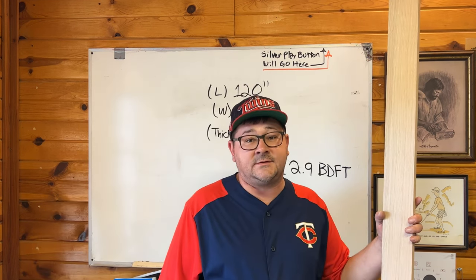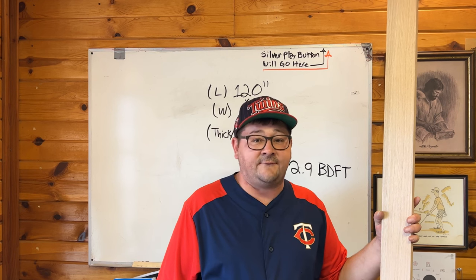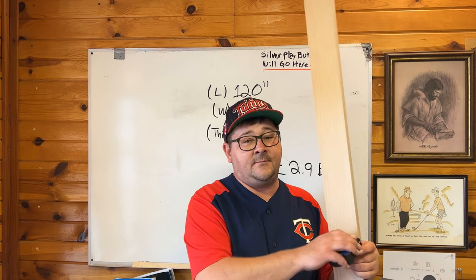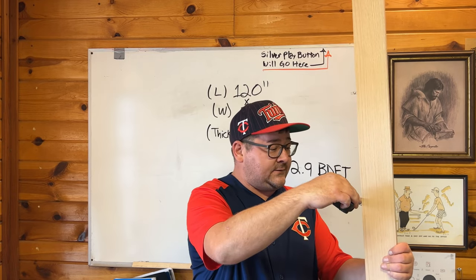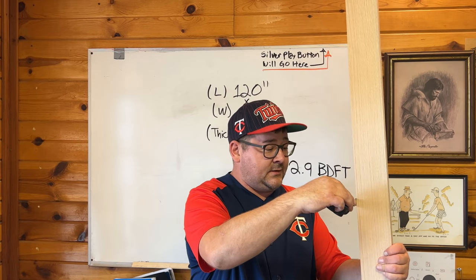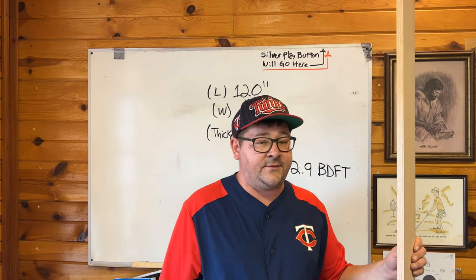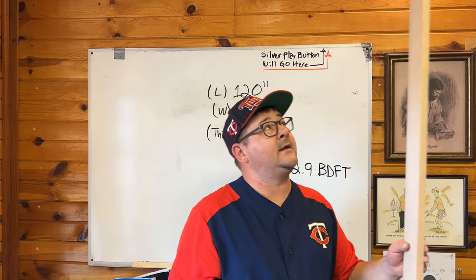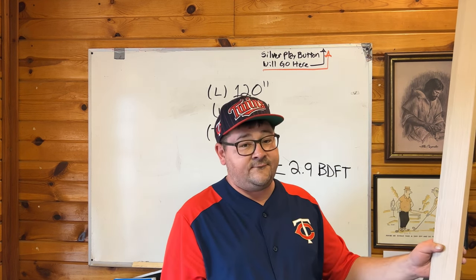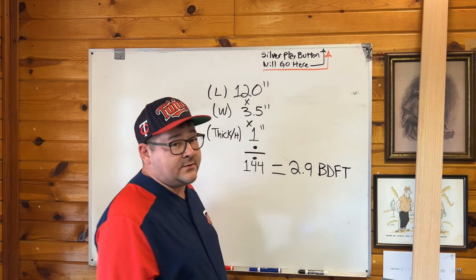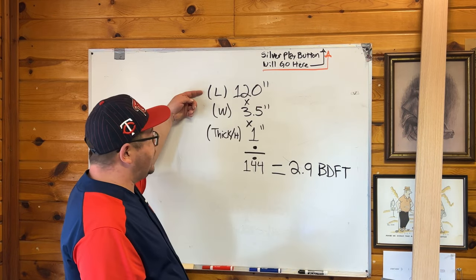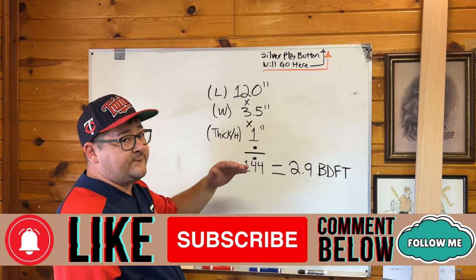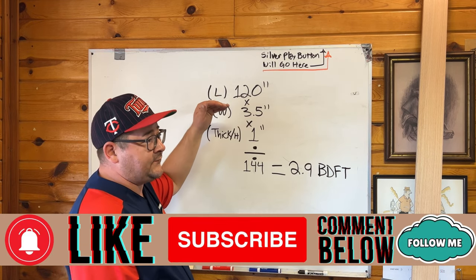Here's a real world example of how to find board footage in your lumber. We have a piece of lumber that is not exactly one inch thick — a little bit lower — but we round up with thickness. This piece is 3.5 inches wide and 10 feet long. Using our formula, the length is 120 inches — we round down to the feet knowing that you're going to square off your edges.